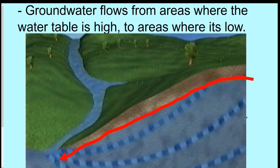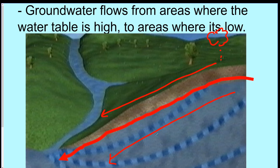Groundwater flows down areas like hills, just like water would on the surface. For example, if it rains and there's a hill, the water flows down the hill. Similarly, the groundwater underneath the ground at that area also flows down the hill — except it's happening underground. It's pretty cool.